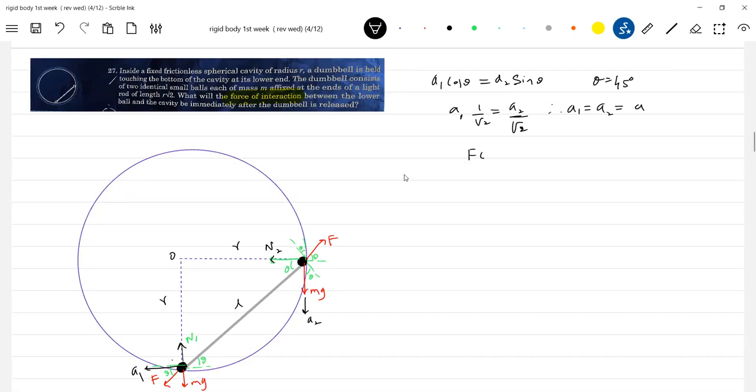F cos theta equal to ma1, then ma2. So, and we have the constraint equation. Solving that... Okay, from that we'll get the value of F. Anybody get the value of F?